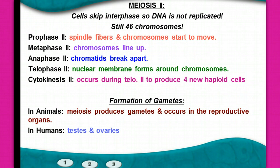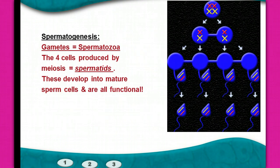In the formation of gametes in animals, this meiosis process occurs in the reproductive organs — in the testes in males and in the ovaries in females. In the male process, there's what's called spermatogenesis, which creates four gametes called spermatozoa. Those four cells produced by meiosis are called spermatids, and they eventually develop and mature into sperm cells that are all functional.